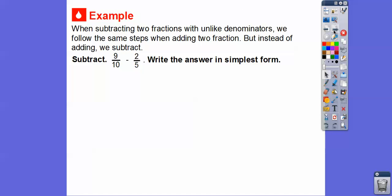When subtracting two fractions with unlike denominators, we follow the same steps when we add two fractions. But instead of adding, we just subtract. So here we're going to subtract nine-tenths minus two-fifths and write our answer in simplest form.